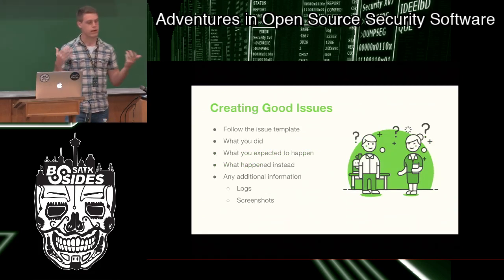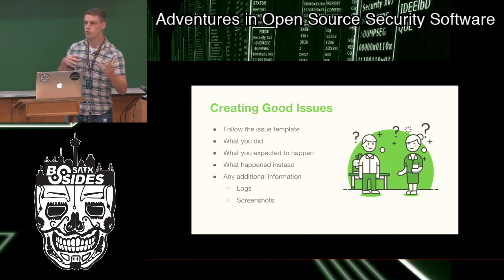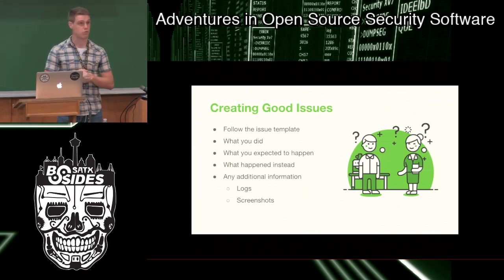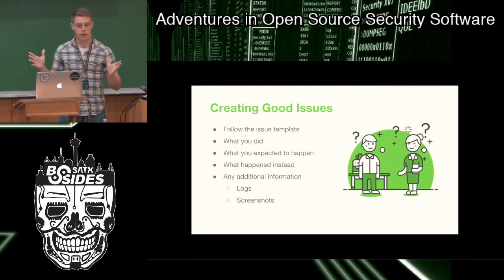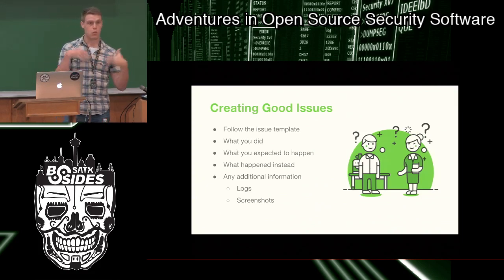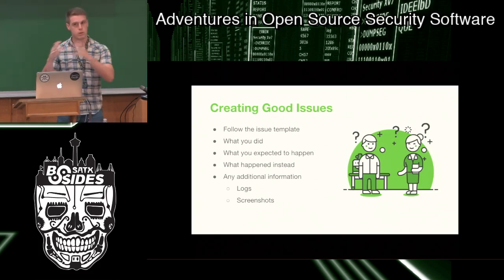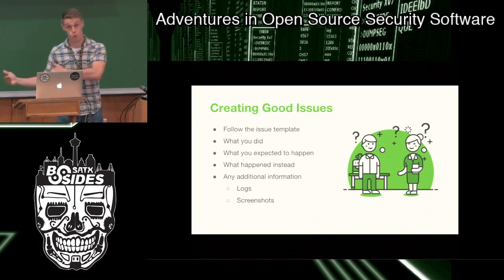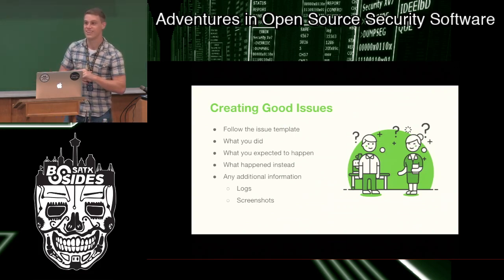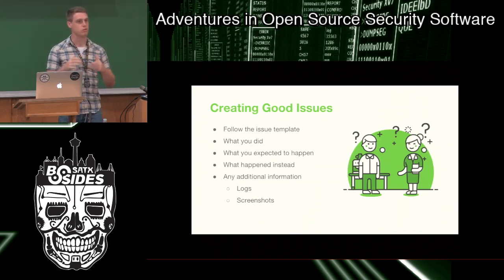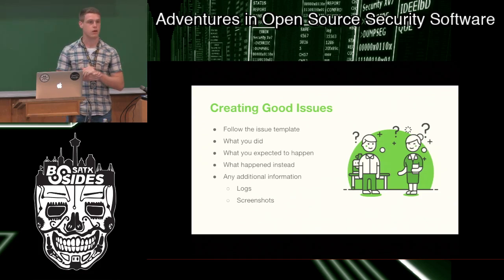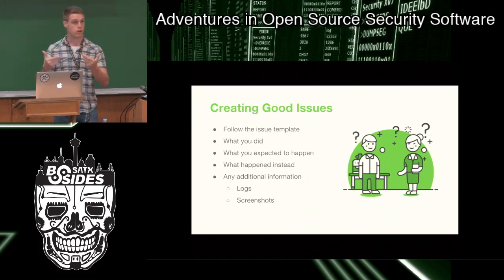So let's start with the user. The first is creating good issues — this is so important. GitHub allows you to make issue templates where it says here's what information I need to help troubleshoot. But even as a user, taking that initiative and over-communicating can be extremely effective. At a high level, just: what did you do, what did you expect to happen, what actually happened instead, and what additional information can you provide? I've gotten issues that say: what did I do? I ran GoFish. What did I expect to happen? It worked. What happened instead? It did not work. Any additional information? Nothing. That's really difficult from a maintainer's perspective.